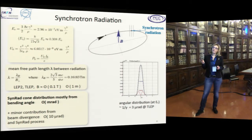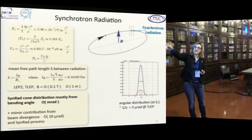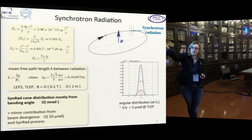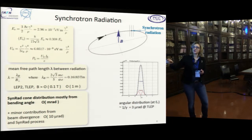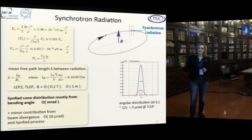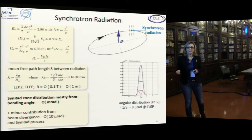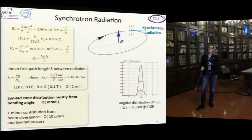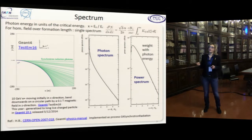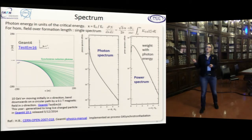Here are the main formulas for synchrotron radiation. With magnetic fields of the order of 0.1 Tesla, similar to LEP2, we have a mean free path length of the order of one meter. The synchrotron radiation cone distribution is mostly from the bending angle plus a minor contribution from the divergence of the order of 10 micro-radians. The angular distribution at the critical energy has been evaluated at the order of 3 micro-radians for 40 GeV.